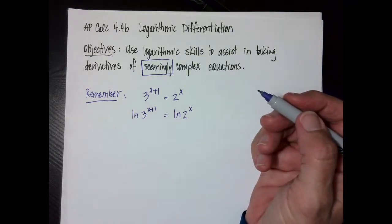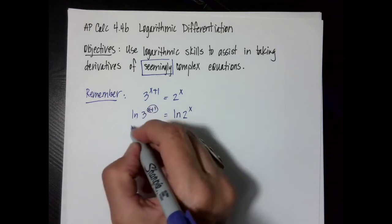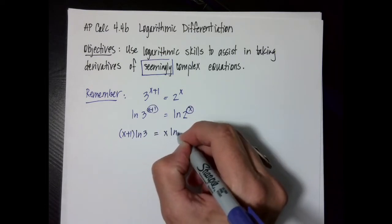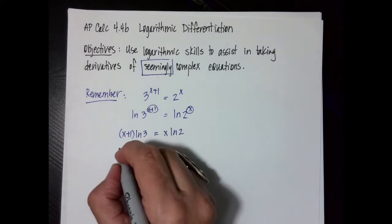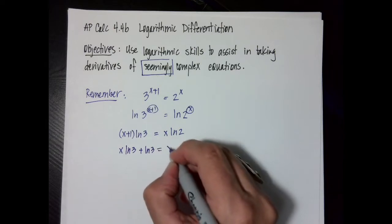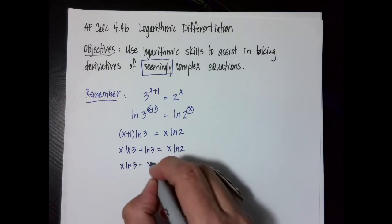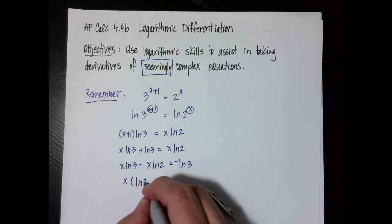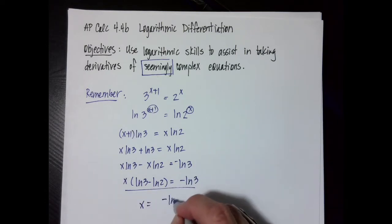Remember in calculus, most of the time we like to use natural log — I like it because it's easier to write, it's less letters. Properties of logarithms say that the exponent goes out front. So this is going to be x plus 1 times the natural log of 3, and x natural log of 2. The goal is to solve for x. I'm going to distribute: x natural log 3 plus natural log of 3 equals x natural log 2. I'll subtract and move terms: x natural log 3 minus x natural log 2 equals negative natural log of 3. Factor out x to get natural log of 3 minus natural log of 2. Divide, and x equals negative natural log of 3 divided by the natural log of 3 minus the natural log of 2.